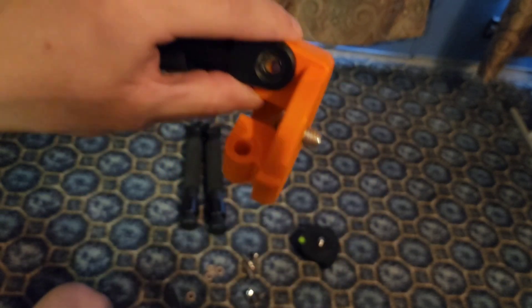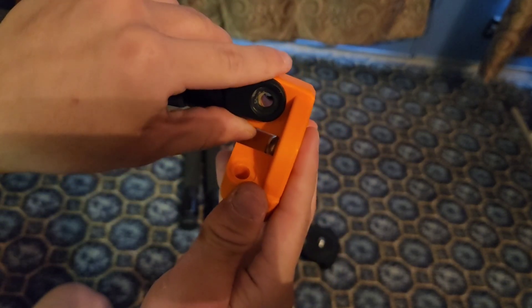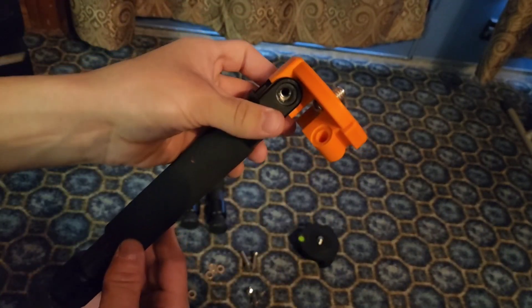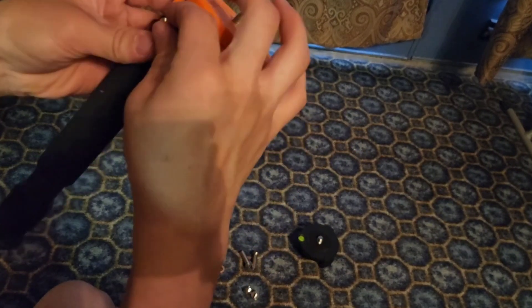Align the holes on the leg and the EQ adapter and place one of the long bolts through the holes. Now loosely screw the bolt into the other side.